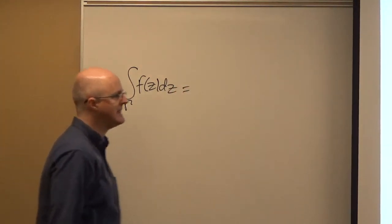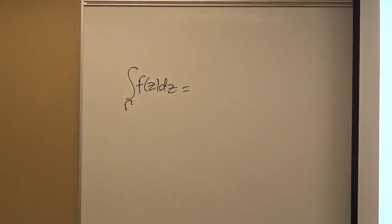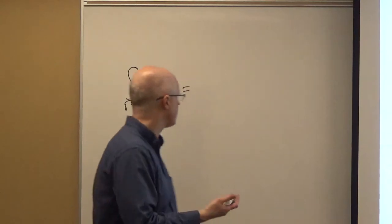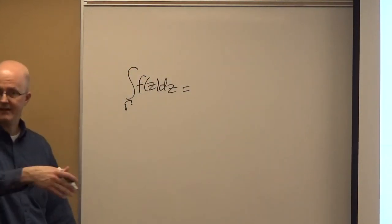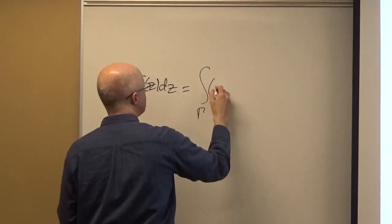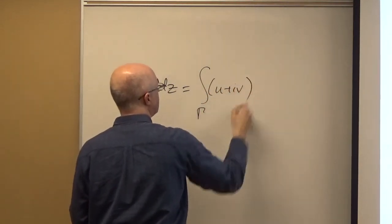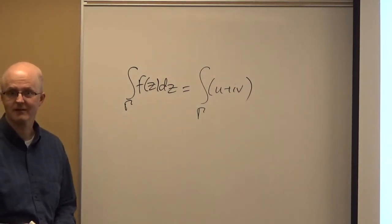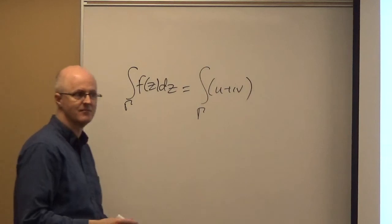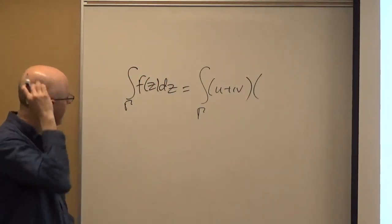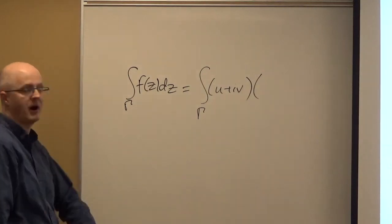Another way we can do it is to relate to line integrals from multivariable calculus. We can think in terms of real and imaginary parts — trying to expand this complex quantity into a real part plus i times an imaginary part. U and V do depend on x and y; those are the real and imaginary parts of f(z).